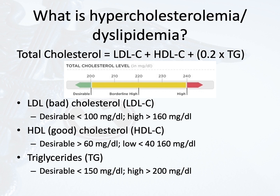Total cholesterol is the sum of bad cholesterol or LDL, good cholesterol or HDL, and triglycerides. Ideally, total cholesterol should be below 200 — the lower the better. Hypercholesterolemia is defined as a total cholesterol greater than 240. LDL is associated with plaque buildup in the coronary arteries, while HDL is associated with plaque removal from the coronary arteries.